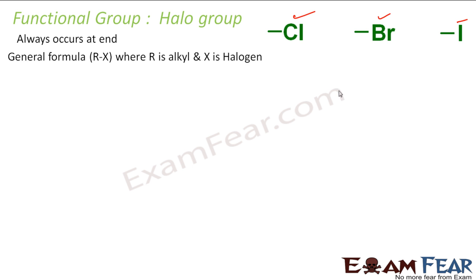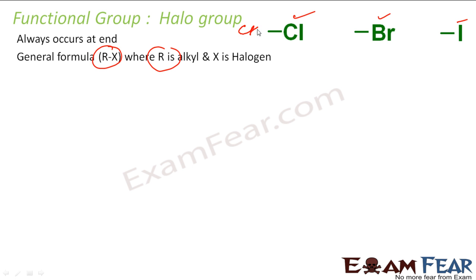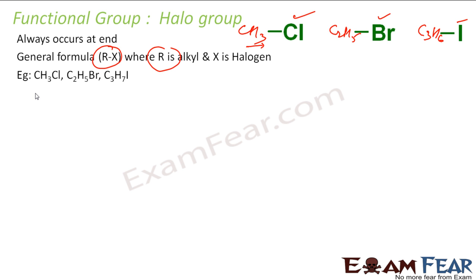The general formula is RX, where R is any alkyl group. For example: CH3Cl, C2H5Br, C3H7I. If you see this, it is the alkyl part — from an alkane you remove one hydrogen to get methyl, ethyl, propyl. So any alkyl group combined with one halogen gives a haloalkane. For example, CH3Cl, C2H5Br, C3H7I.